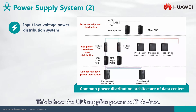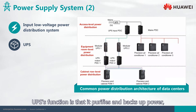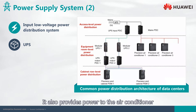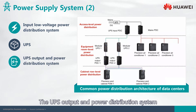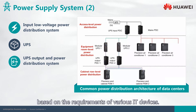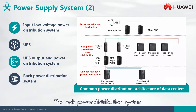The UPS purifies and backs up power, providing IT loads with pure and reliable power. It also provides power to air conditioners and lighting devices through the main PDC. The UPS output power distribution system distributes the UPS output power based on the requirements of various IT devices. The rack power distribution system then distributes the power inside the racks.